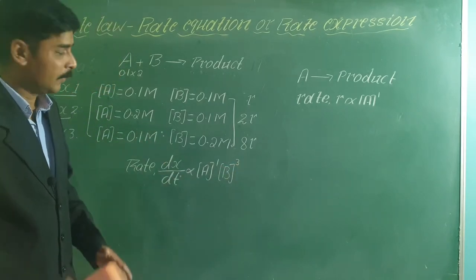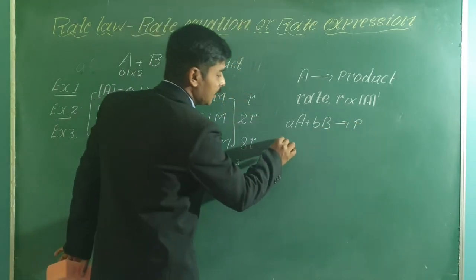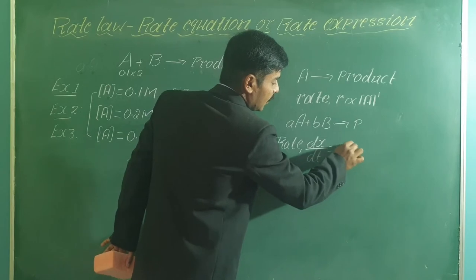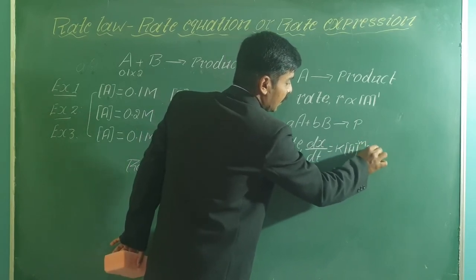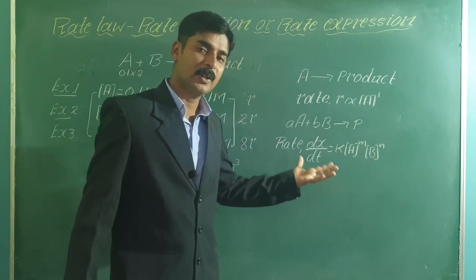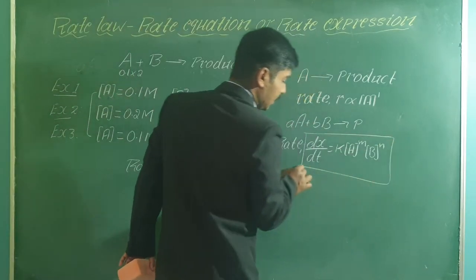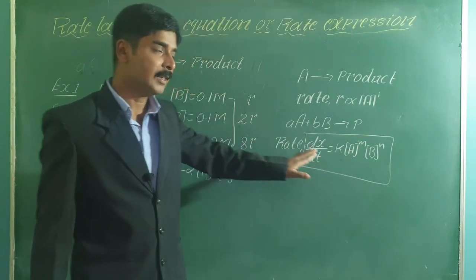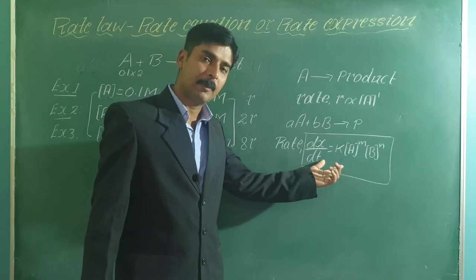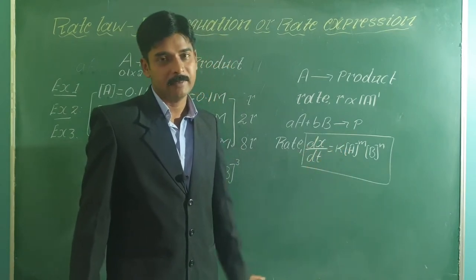So for the reaction A + B → product, the experimentally determined rate equation is: rate = K × [A]^M × [B]^N, where M and N are determined by experiment. This is the experimentally determined rate equation, also called the rate law. From now on, whenever we refer to the rate equation, we mean the experimentally determined one.